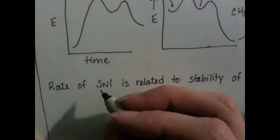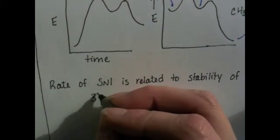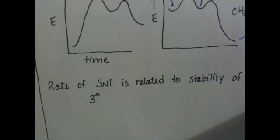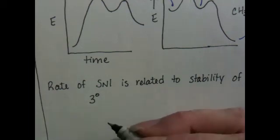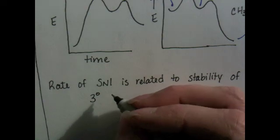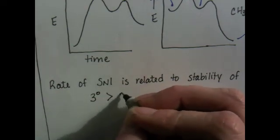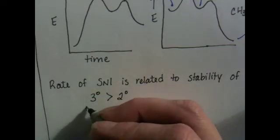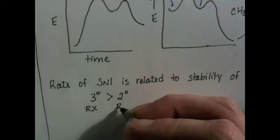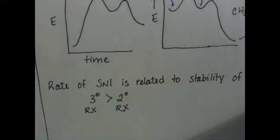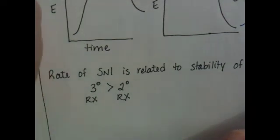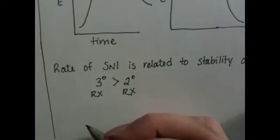The most stable carbocation is the tertiary, and that means tertiary alkyl halides react the fastest in an SN1 mechanism. Secondary alkyl halides are going to react the next fastest. The SN1 mechanism essentially does not proceed at all for primary or methyl alkyl halides.